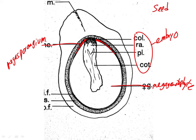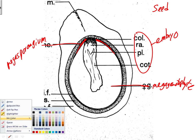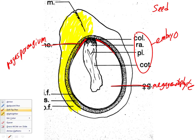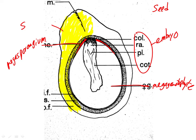Everything outside that megasporangium — all of this — is all integument. It's not called the integument anymore because it's matured into the seed coat. In the cycads, it's a fleshy seed coat. Both the integument and the megasporangium have a couple of layers, but the whole thing is now seed coat — the mature integument surrounding the seed.